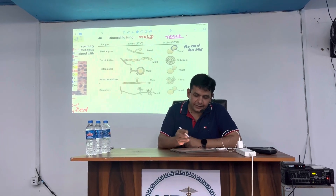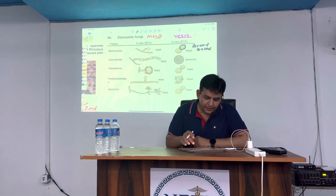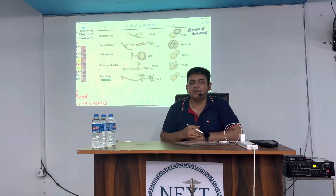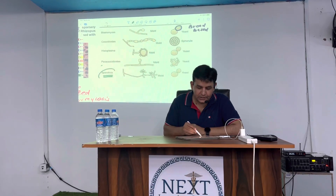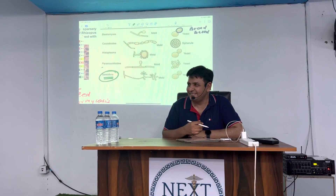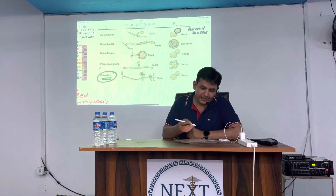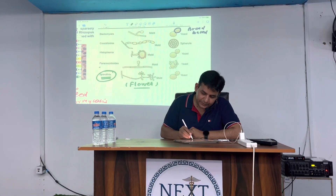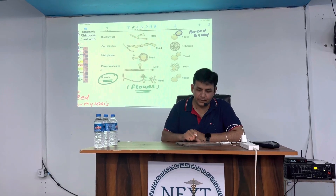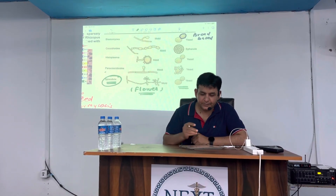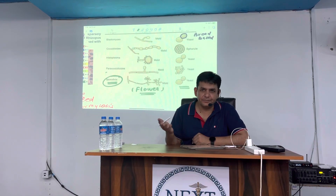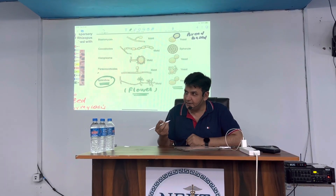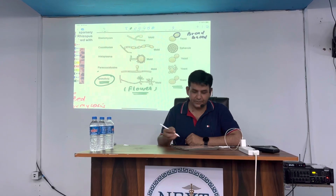Now we will tell you about the dimorphic fungi. First of all, Sporothrix schenckii causes sporotrichosis. This organism is characterized by plumber-like sporulation and narrow-based budding, which is seen in the yeast form of Sporothrix.